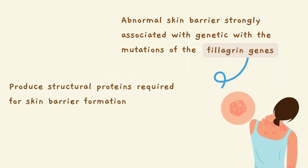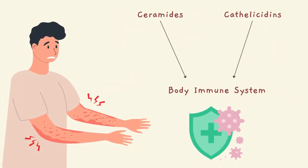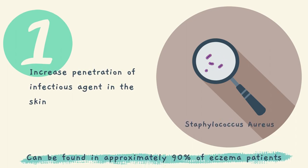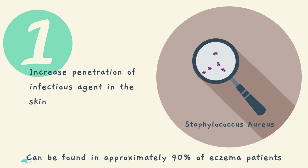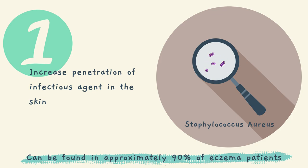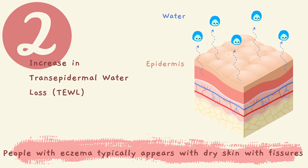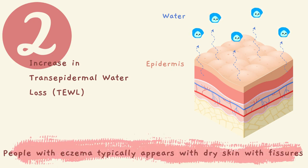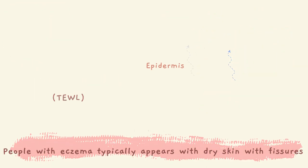Abnormal skin barrier has been strongly associated with genetics, particularly mutations of the filaggrin gene, which is responsible for producing the structural proteins required for skin barrier formation. People with atopic dermatitis have been shown to have insufficient lipid molecules within the skin called ceramides, and antimicrobial peptides called cathelicidins. These two play a role in the body's immune system as the first-line defense against harmful pathogens. This low number of ceramides and cathelicidins causes: first, increased penetration of infectious agents in the skin — Staphylococcus aureus is one of the most common examples, seen in approximately 90% of people with atopic dermatitis; and second, increased transepidermal water loss (TEWL), which is the reduction of the skin's ability to hold water and prevent its evaporation to the surrounding atmosphere. This is why people with atopic dermatitis typically present with dry skin with fissures.